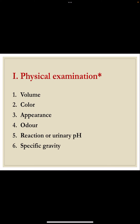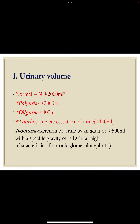Physical examination is done under the headings: volume, color, appearance, odor, pH, and specific gravity. Starting with volume: normal urinary volume in 24 hours is 600 to 2000 ml. Polyuria is when 24-hour urine exceeds 2000 ml. Oliguria is when it is less than 400 ml. Anuria is when less than 100 ml is voided in 24 hours. Nocturia is excretion of more than 500 ml of urine with specific gravity less than 1.018 at night time, commonly seen in chronic glomerulonephritis.